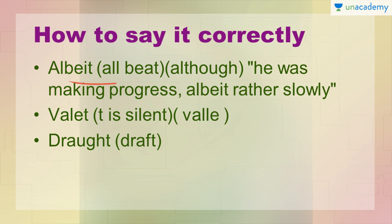The first word we have is 'albeit.' This is not 'I'll beat' — this is 'all beat.' It means 'although.' Let's take an example: 'He was making progress, albeit rather slowly.' Wo progress kar raha tha, but uski progress dhiri dhiri, gradually ho rahi thi.